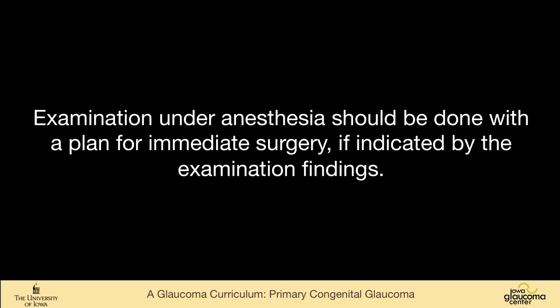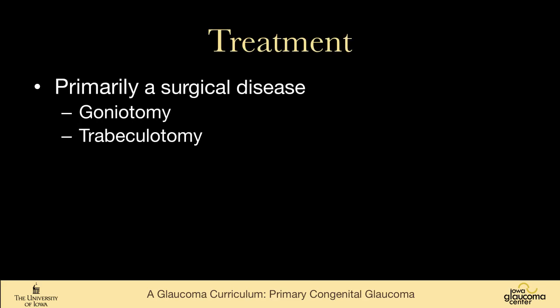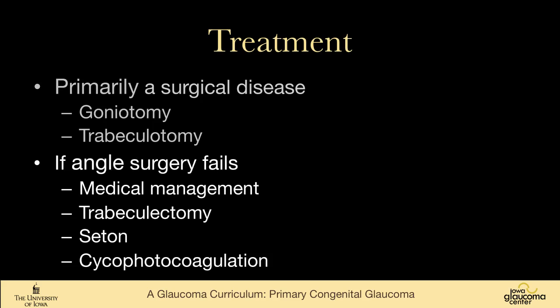Whenever you put a baby to sleep for an examination under anesthesia, you should be prepared to do immediate surgery if indicated by the findings. Anesthesia in a baby is not a trivial thing, and bringing them back for a second surgery is not fair. It's primarily a surgical disease — either a goniotomy, which requires a fairly clear cornea, or a trabeculotomy, covered in section 46. If angle surgery fails, we treat them more like an adult with medical management, trabeculectomy, tube shunt, setons, or cyclophotocoagulation.